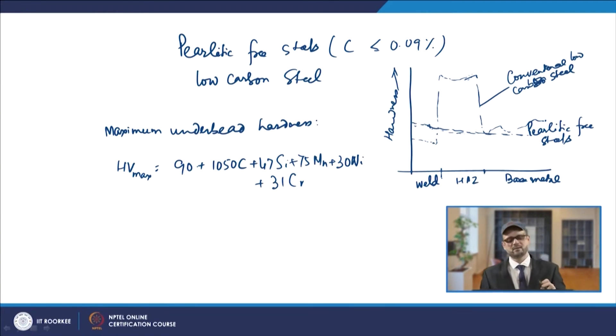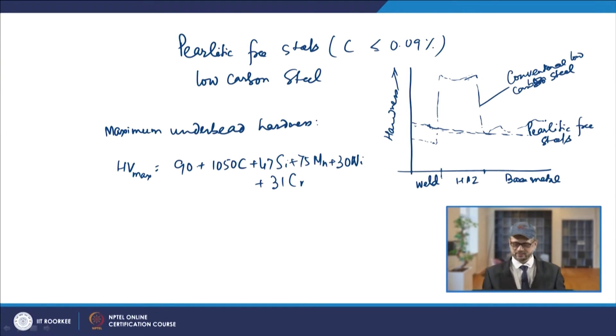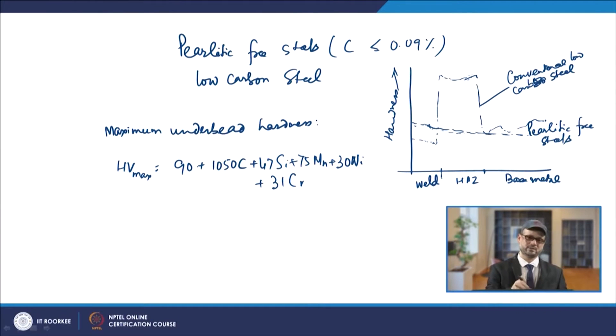Under-bead zone hardness values are calculated and are available for different steels or different plate thicknesses using this standard formula. That value has to be limited — normally it should be a maximum of around 350 to 400 Vickers hardness. For low alloy steels in the creep temperature regime, it is even stricter, and these limiting values must be kept in mind because exceeding them may lead to failure under different conditions.